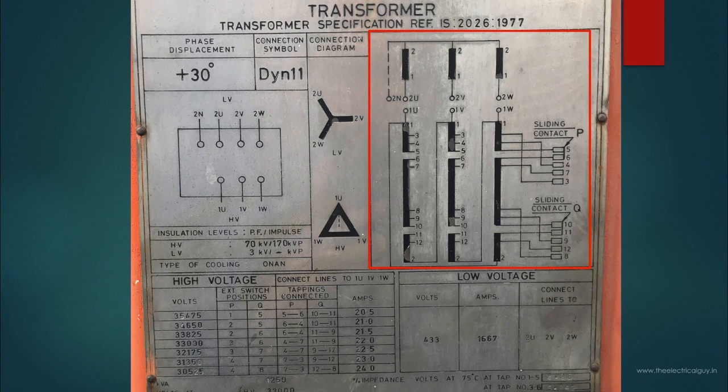On this diagram here you can see the HV winding is shown with taps provided. These taps can be used in case if your voltage is fluctuating so you can adjust the taps and accordingly you will get the constant voltage as output.